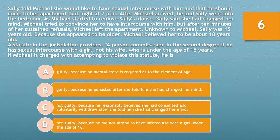Question number six. Sally told Michael she would like to have sexual intercourse with him and invited him to her apartment that night at 7 p.m. After Michael arrived and they went into the bedroom, as Michael started to remove Sally's blouse, Sally said she had changed her mind. After ten minutes of her sustained refusals, Michael left the apartment. Unknown to Michael, Sally was 15 years old; because she appeared to be older, Michael believed her to be about 18 years old.